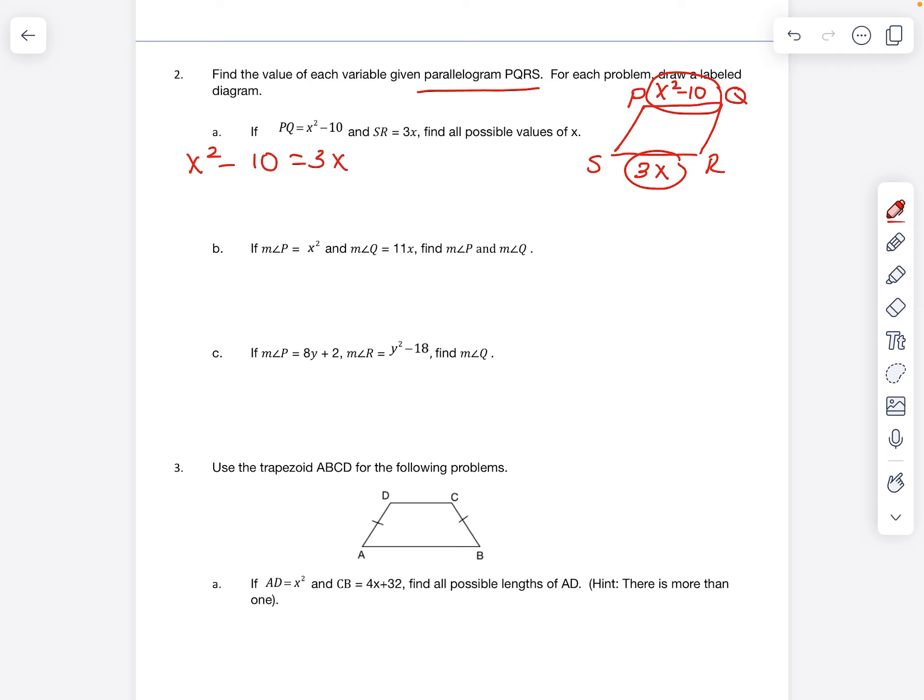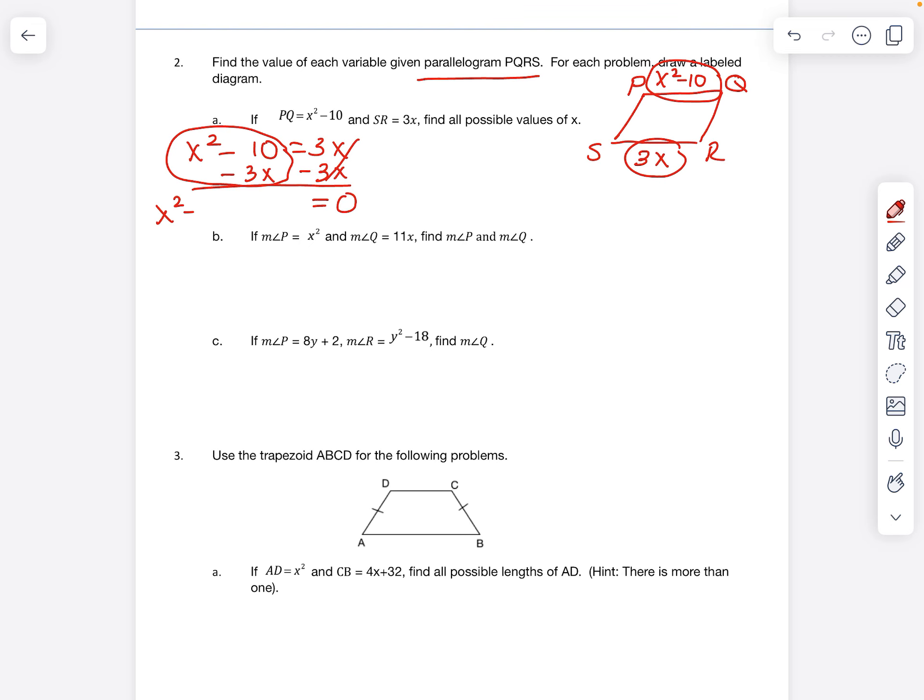So we're going to set them equal to each other. Remember, anytime you have a problem with x squared, we want to set to 0. Leave the x squared where it is and move everything else over. So I need to subtract that 3x. So on this side, I have 0. These cannot be combined. They're not like terms, so I'm going to rewrite it in order: x squared minus 3x minus 10.